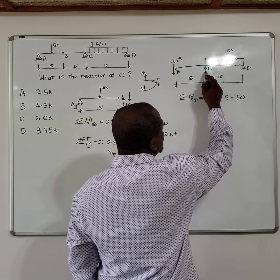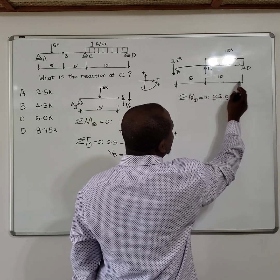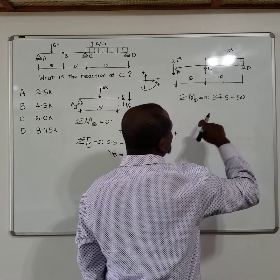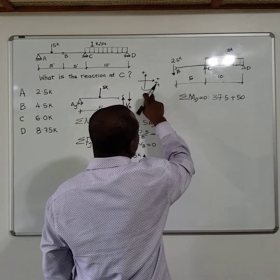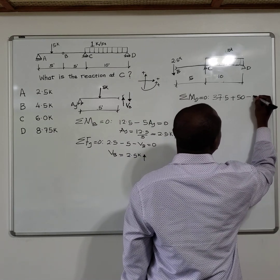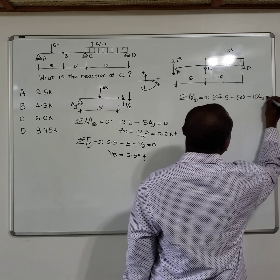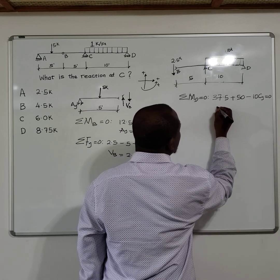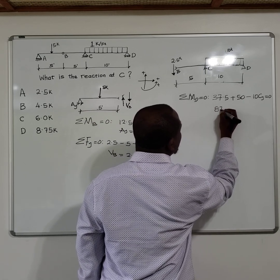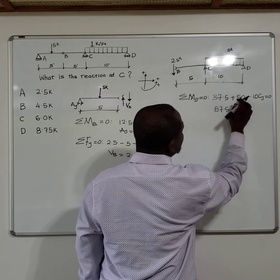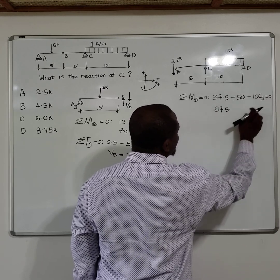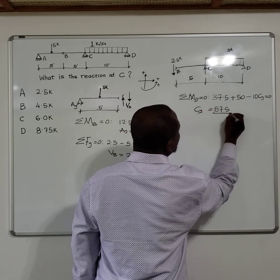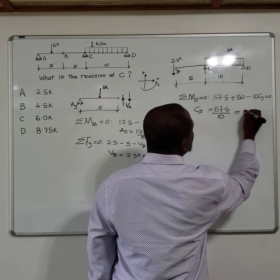So this force, CY, multiplied by this moment arm of 10 would be in clockwise, would be based on our orientation that would be negative, so that would be negative 10 CY equals zero. When you do the math here, that means 87.5 - if you add this to this - and this comes to the other side of the equal sign, that would be CY divided by 10.